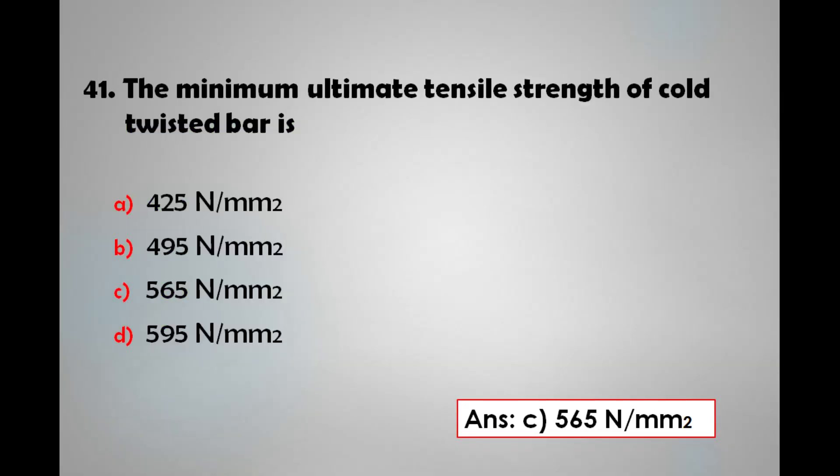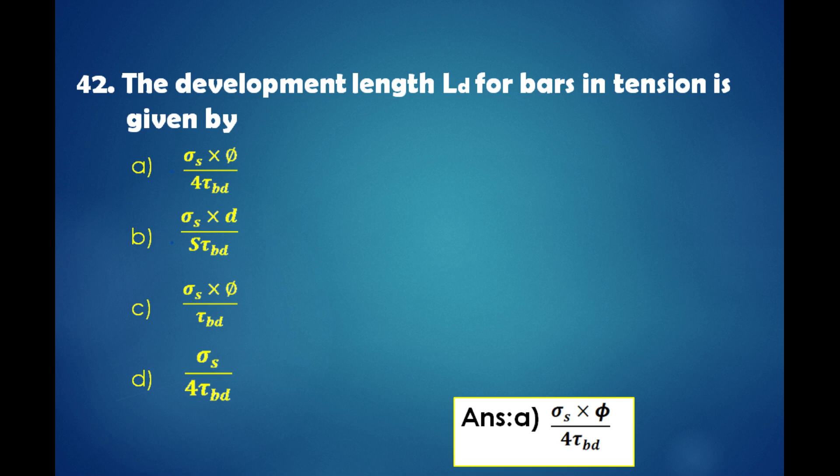The minimum ultimate tensile strength of cold twisted bar is: a) 425 N/mm², b) 495 N/mm², c) 565 N/mm², d) 595 N/mm². The answer is: the minimum ultimate tensile strength of cold twisted bar is 565 N/mm².